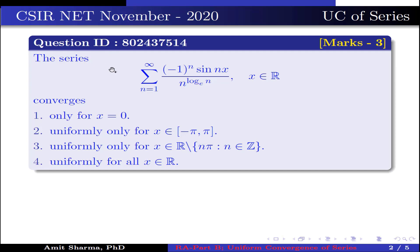The question is: the series summation n varies from 1 to infinity, minus 1 to the power n sin nx divided by n to the power log n, where x belongs to R, converges. Option 1: only for x equal to 0. Option 2: uniformly only for x belongs to closed interval minus pi to pi. Option 3: uniformly only for x belongs to R excluding n pi where n belongs to Z. Option 4: uniformly for all x belongs to R.